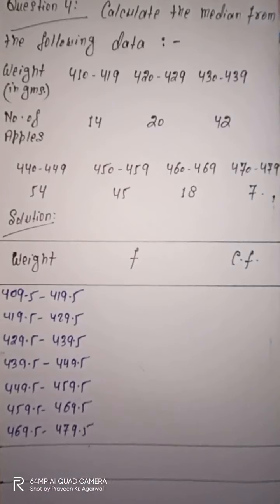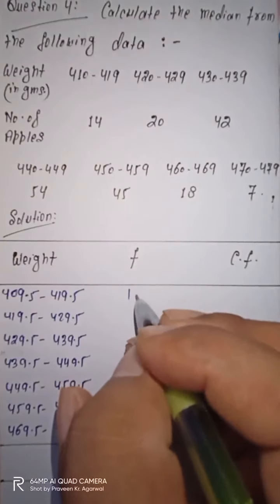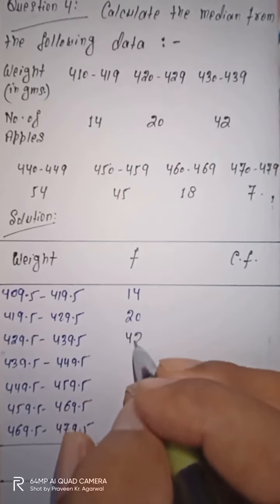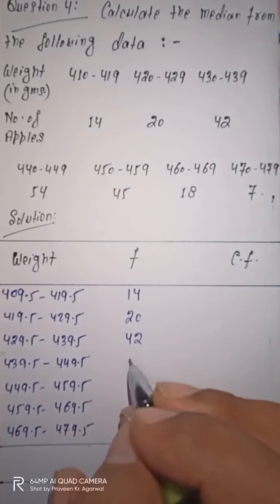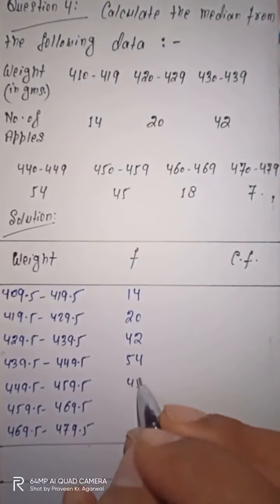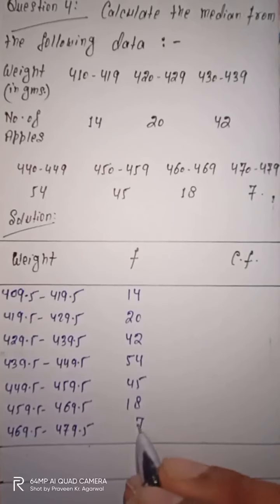So for finding the median, you must convert the inclusive series to the exclusive class interval. In this way, we convert this inclusive class interval to an exclusive class interval. Now let us note down their frequencies.